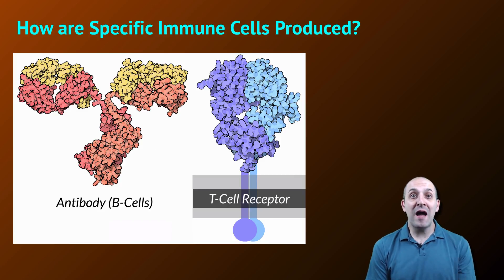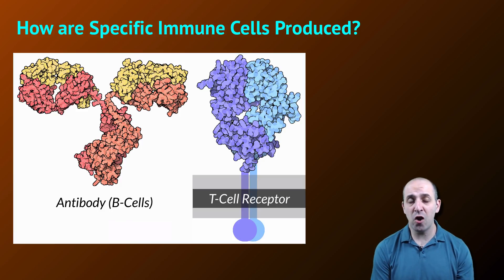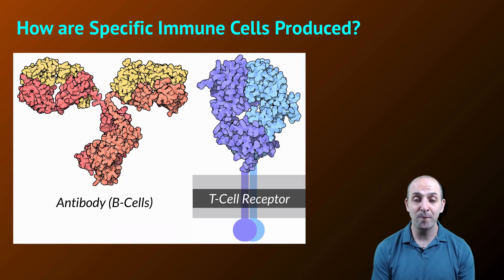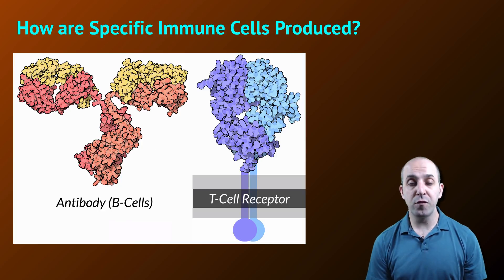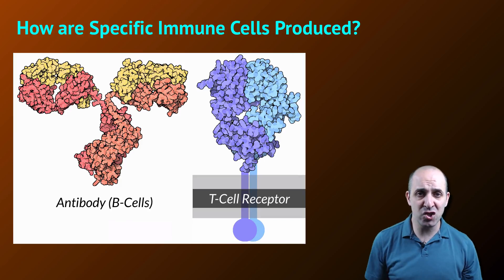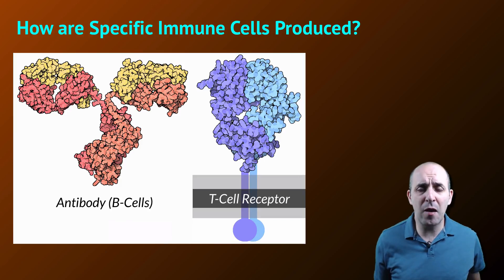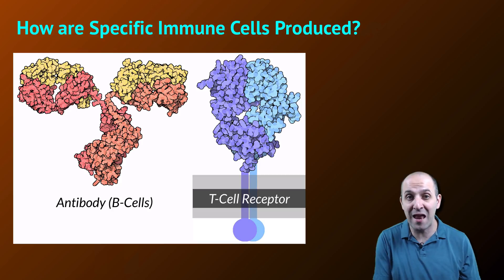An obvious question is: how are specific immune cells produced? If we think about the variety of different pathogens we'll be exposed to over the course of our lives, they number in the many, many thousands — if not hundreds of thousands — of different organisms that have the potential of causing disease. At the same time, we need to generate specific immune cells for each one of those pathogens as part of our acquired immunity. We don't have that many genes — at most about 20,000 — and we need to make antibodies and B cell and T cell receptors that can respond to a variety of pathogens much larger than that number.